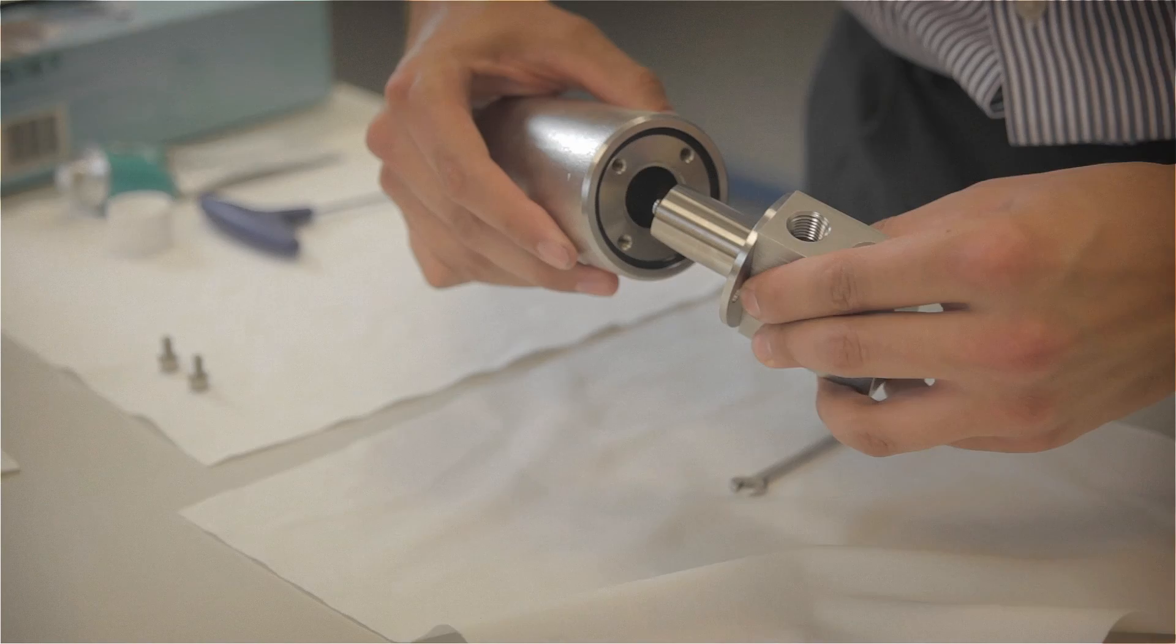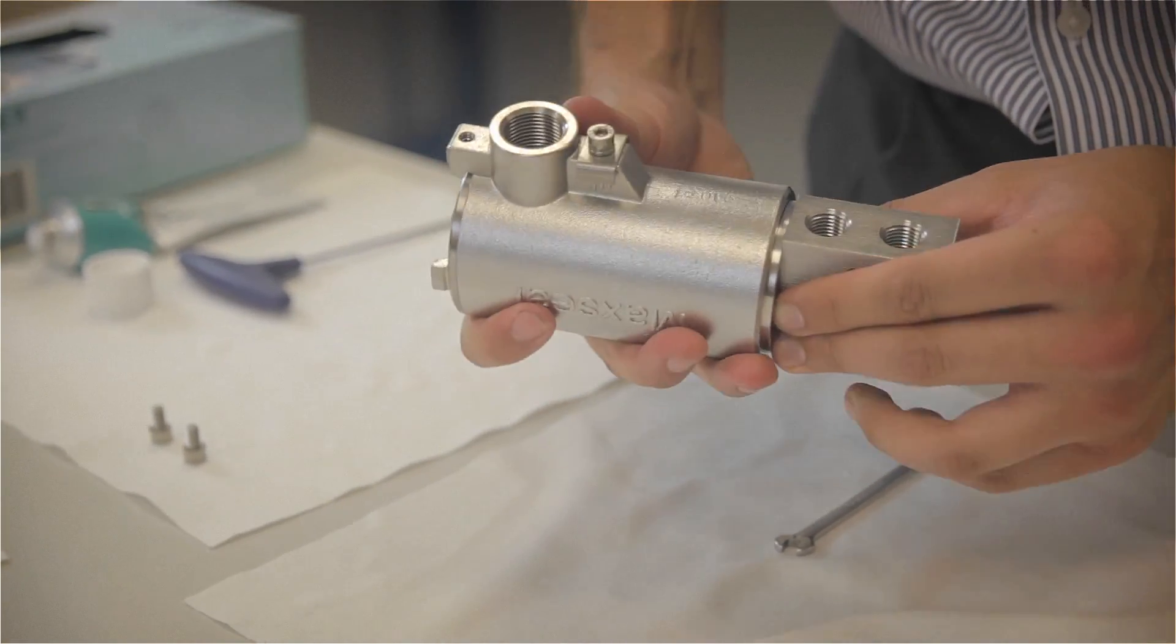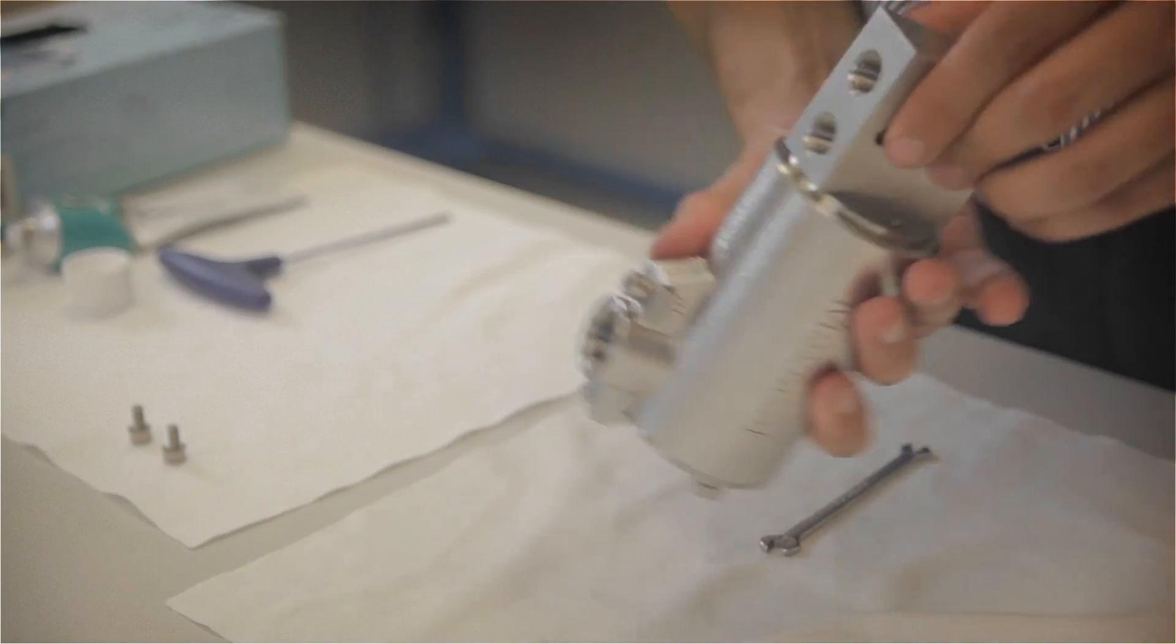We're then going to mate the valve with the solenoid, ensuring that the conduit and the inlet and outlet are within the same alignment.